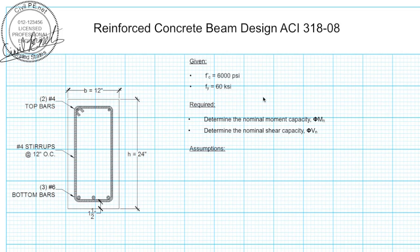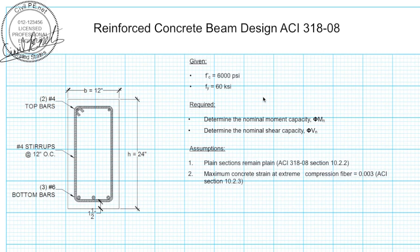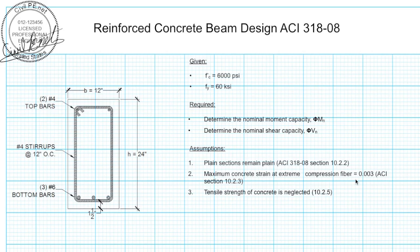The yield strength for steel is 60 ksi. We're going to make some assumptions in order to make these calculations happen. Our first assumption is that plain sections remain plain — this is dictated in ACI 318-08 — basically stating that when this section deforms, everything deforms in a linear manner. We're also stating the maximum concrete strain at the extreme compression fiber is equal to 0.003, as dictated by ACI section 10.2.3.